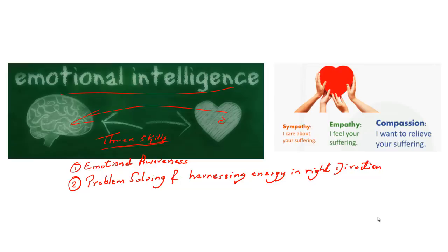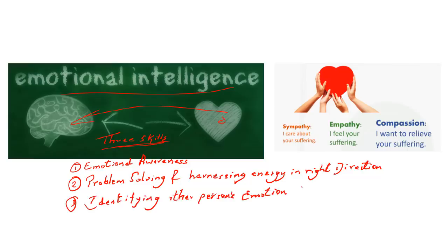The third important skill under emotional intelligence, unlike the first two which dealt with identifying one's own emotion and directing it rightly, is about identifying another person's emotion. In the first two skills, one discovered the inner self and its emotions. The third skill is also about identifying what the other person is going through — seeing what another person is feeling and driving that narrative.